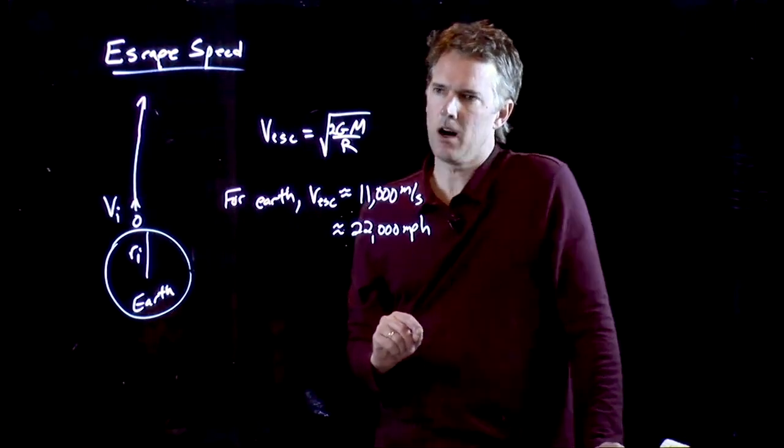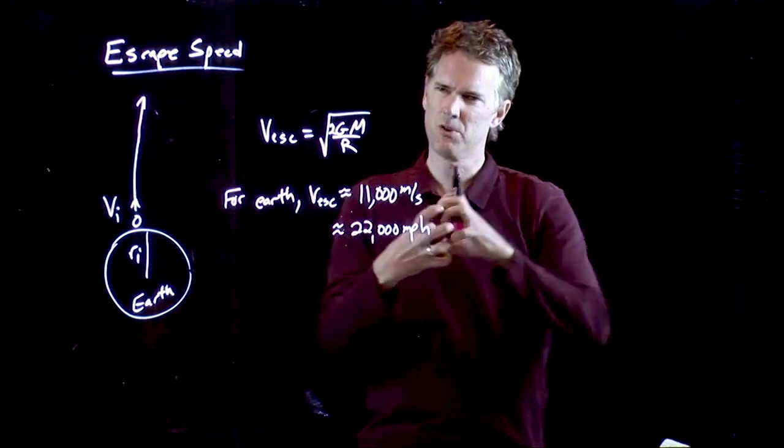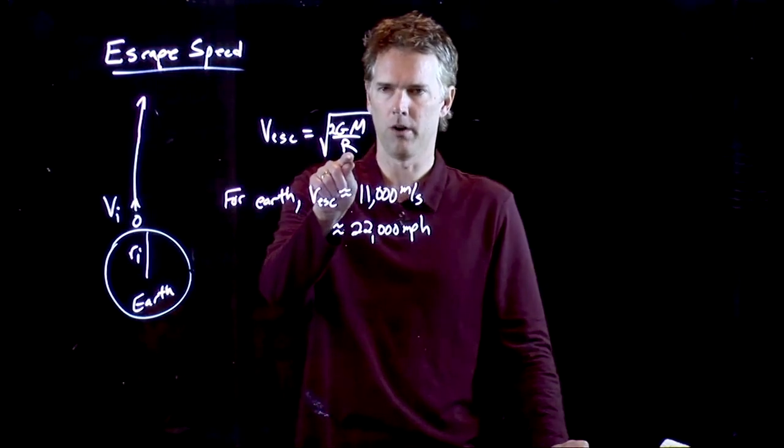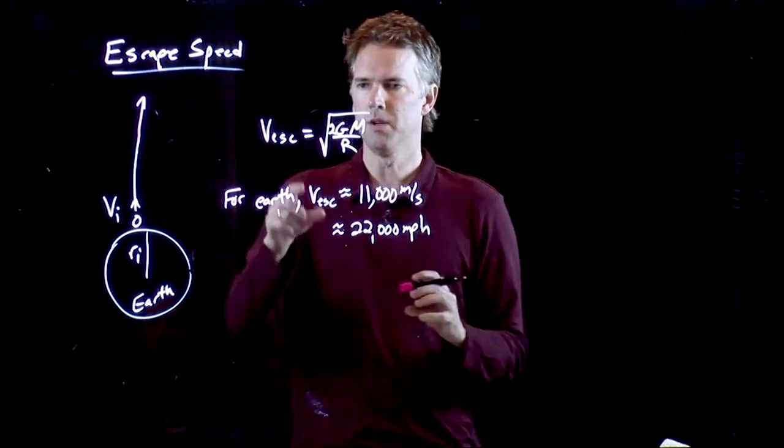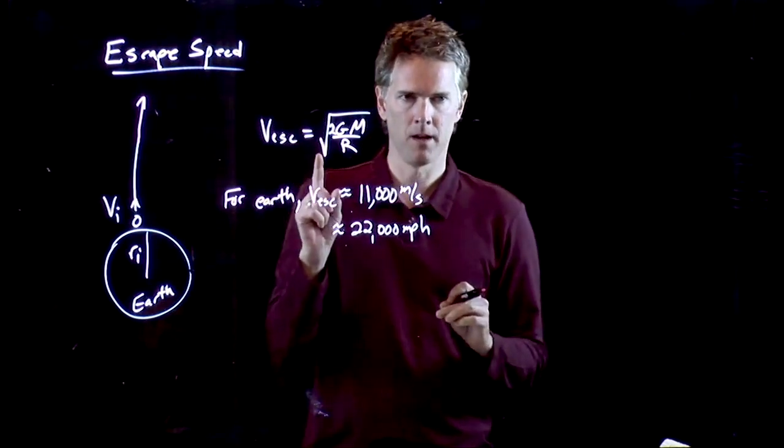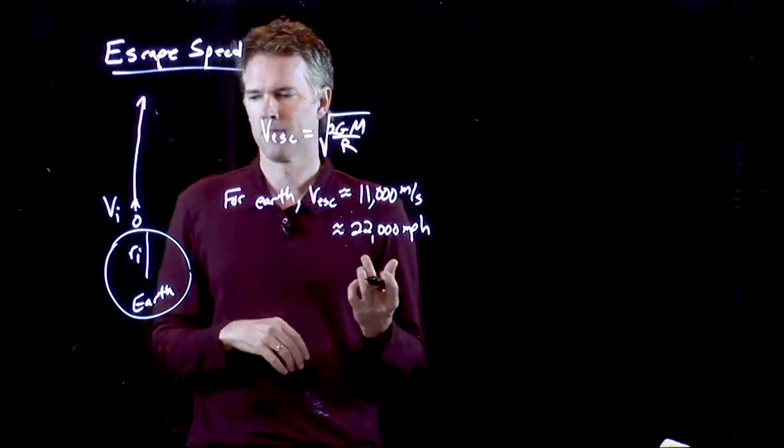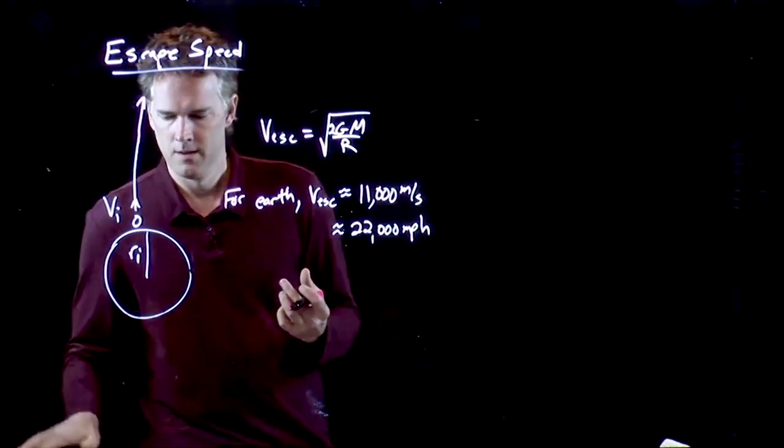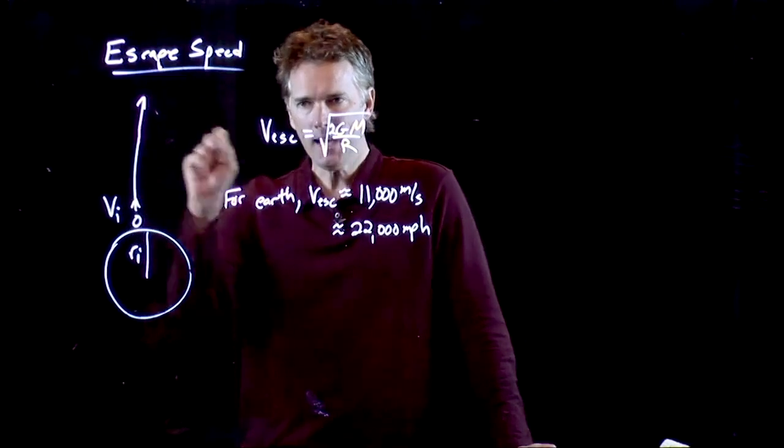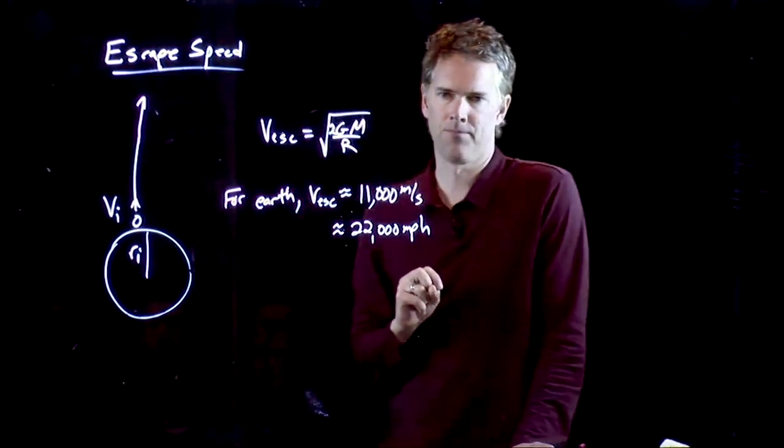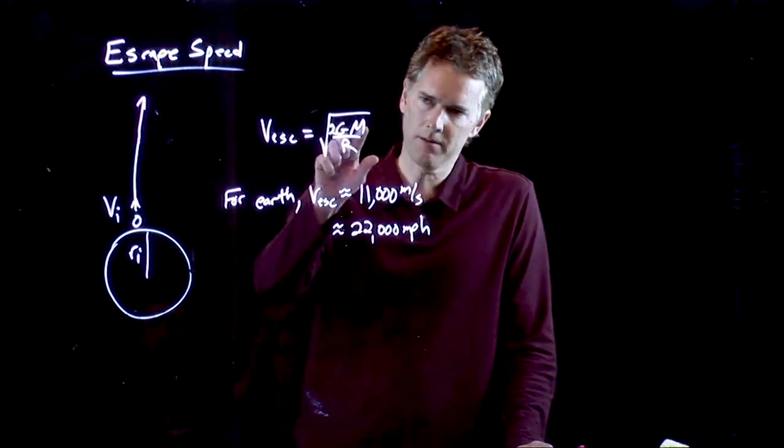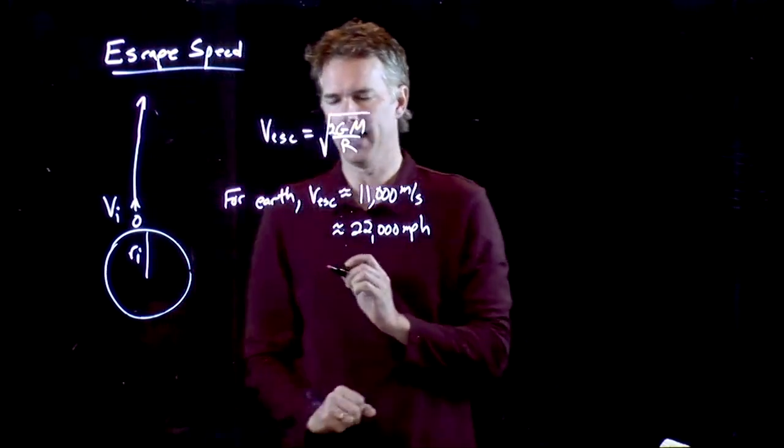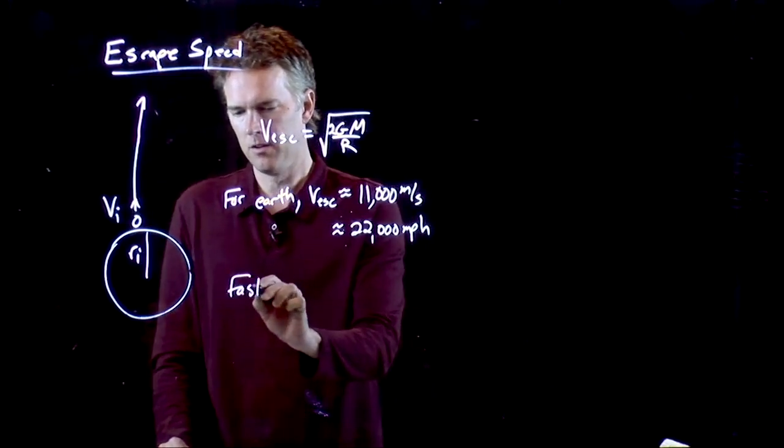But let's say we take our earth and we scrunch it together. If we scrunch it together, R, of course, goes down, which means that the escape speed goes up. It gets harder and harder to leave that planet. And let's say that I scrunch it down so much that I can't launch anything off of it. Let's say I increase the mass so much, I decrease the radius so much that I can't launch anything off of that planet.